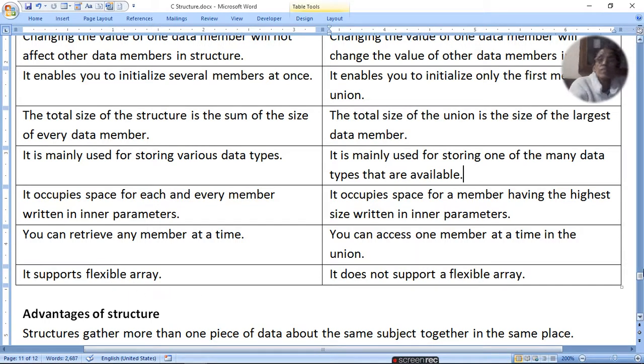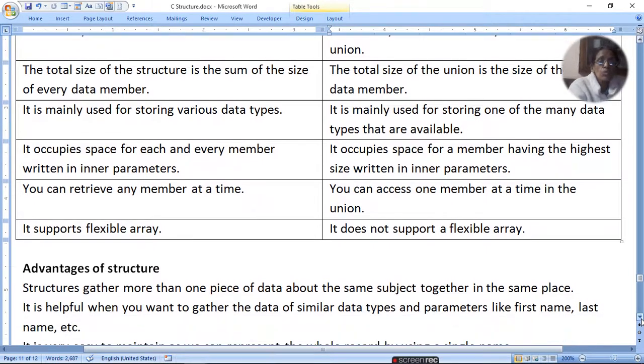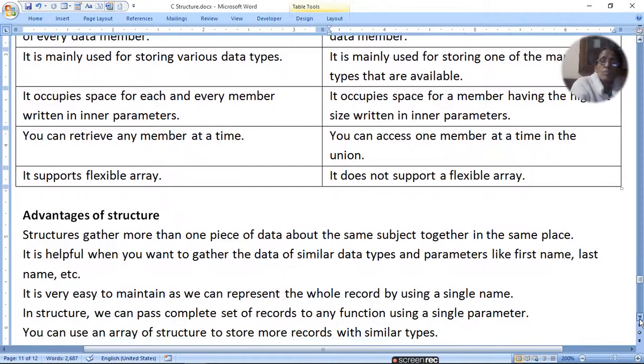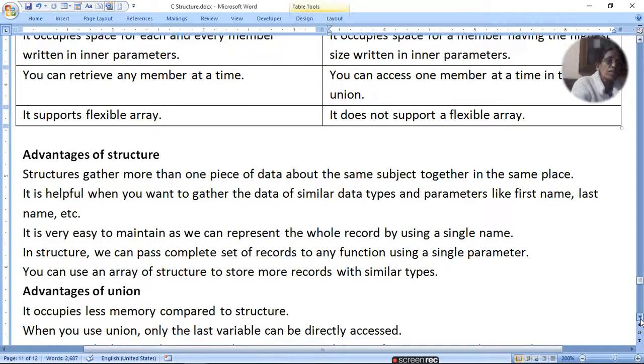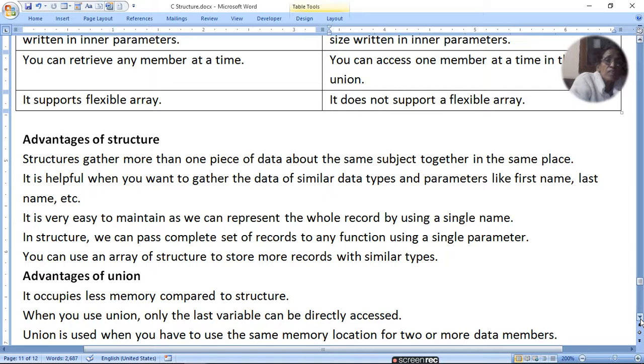The advantage of structure is to gather more than one piece of data about the same subject together in the same place. It is helpful when you want to gather data of similar type and parameters like first name, last name. It is very easy to maintain as we can represent the whole record by using a single name.